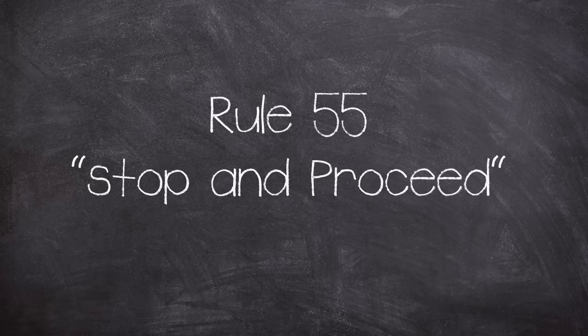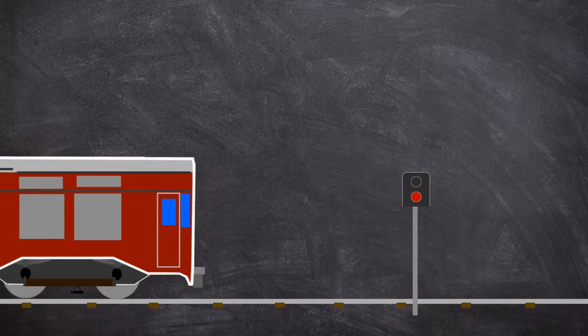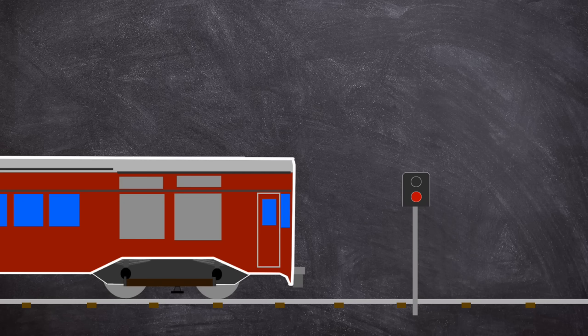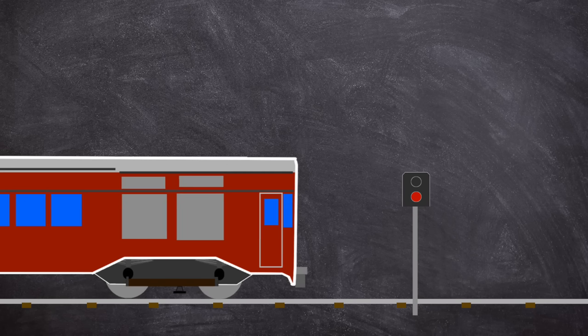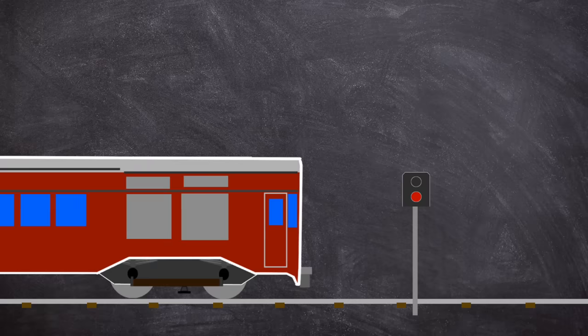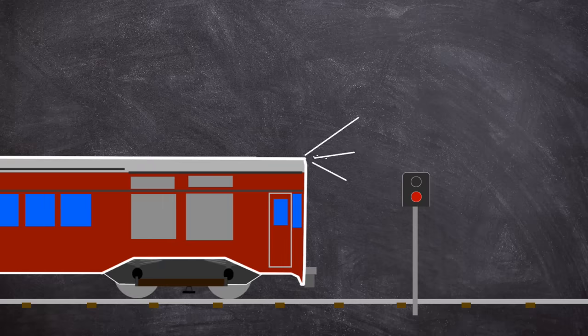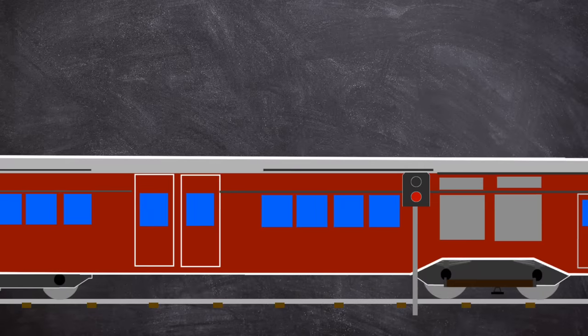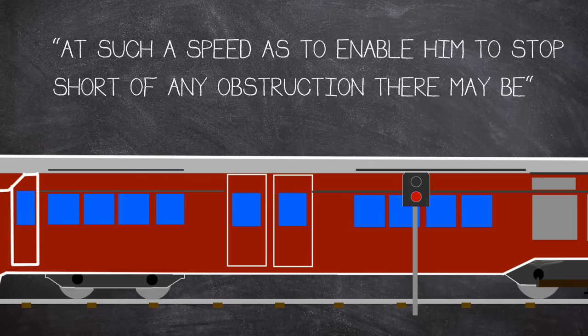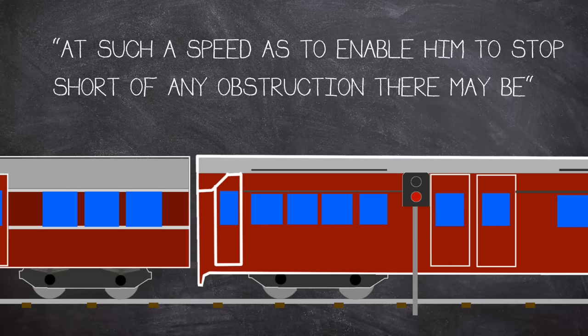Now, this rule has changed significantly in its wording into the modern day, but the theory is the same. In that, if a driver cannot make communication with the signaler, then, after waiting a certain amount of time, in 1953 this would have been at least a minute, then the train can proceed past the signal at danger under its own authority. The train must proceed at such a speed to enable him to stop short of any obstruction there may be, as noted in the Ministry of Transport report.